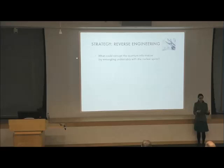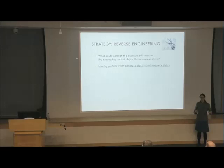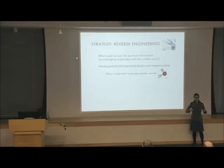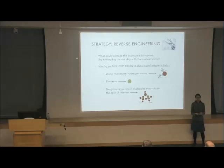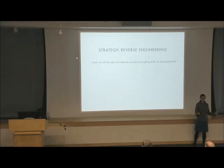Suppose that quantum information were stored in some nuclear spins in the brain. What would be the influences around these nuclear spins that could decohere their state and corrupt the quantum information? There are a lot of particles nearby that generate fields that interact with our particles. For example, a lot of molecules have hydrogens. Those hydrogens can generate fields that interact with our nuclear spins. Also, electrons are nearby. Suppose that our nuclear spins belong to atoms and molecules — those molecules contain other atoms which are very nearby, and those other atoms also have nuclear spins. Those spins can interact with each other. All these influences could decohere our spins.